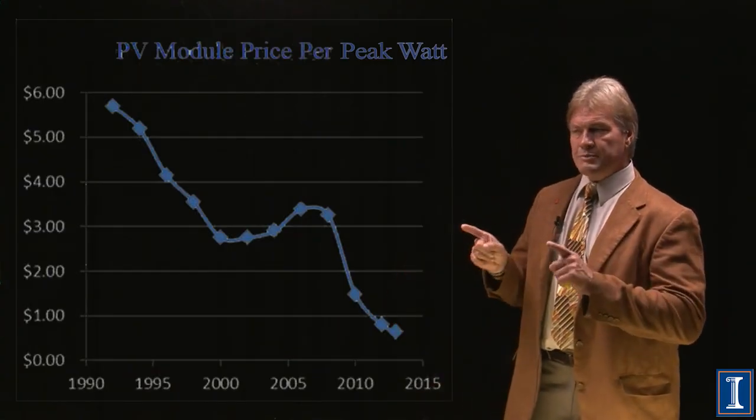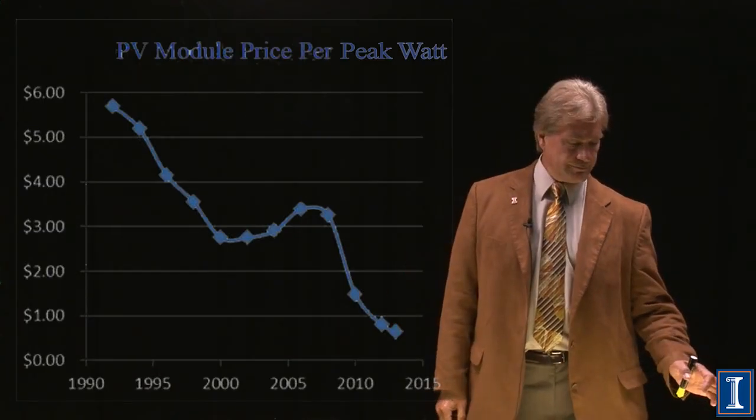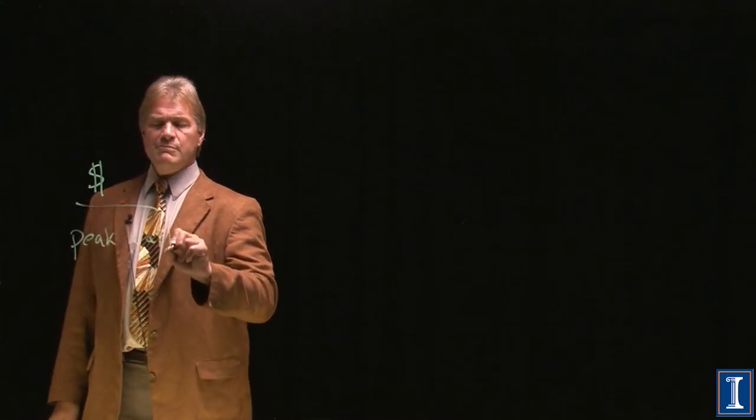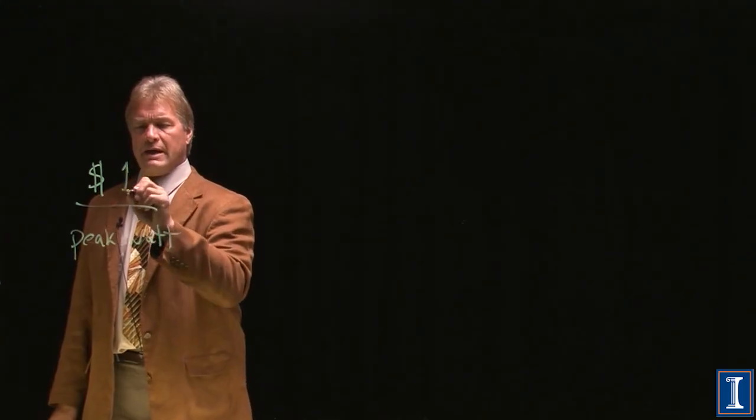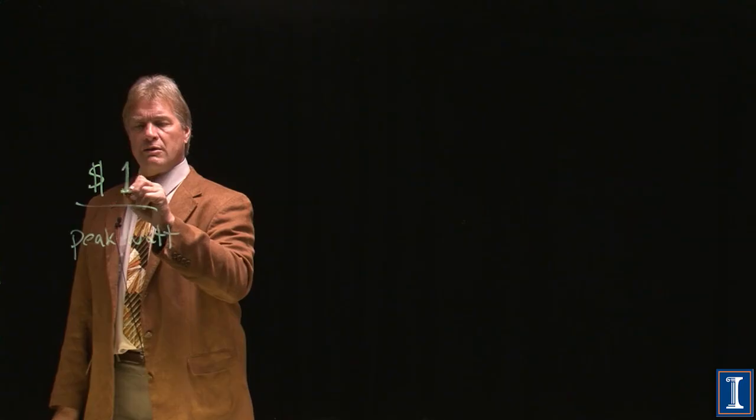Still though, this is price per peak watt. And we don't buy electricity that way. We pay dollars or some type of currency per kilowatt hour or per joule. We pay per the energy produced, not the energy it could hypothetically produce on a bright sunny day. How do I convert these? Let's do a little math. Dollars per peak watt. And we can multiply in the end, but let's just start out by saying I could buy those cells for $1 per peak watt.